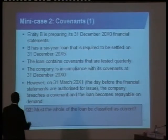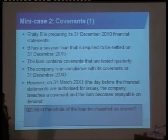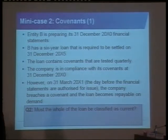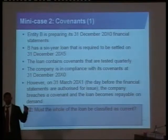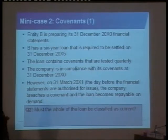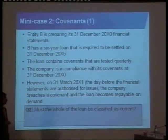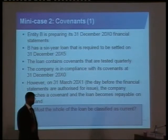Let's look at an example. Entity B is preparing its 31st December financial statements. It has a six-year loan required to be settled on 31st December. The loan covenants are tested quarterly, and the company is in compliance with its covenants at 31st December — plain sailing, everything's fine. However, on 31st March, the day before the financial statements are authorized for issue, the company breaches a covenant and the loan becomes repayable on demand.